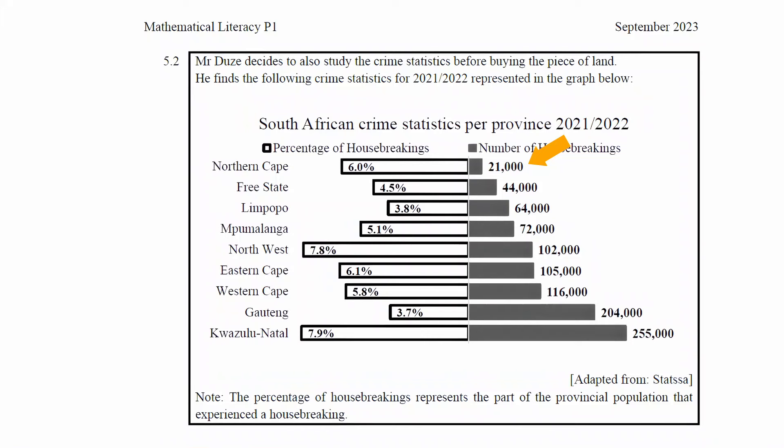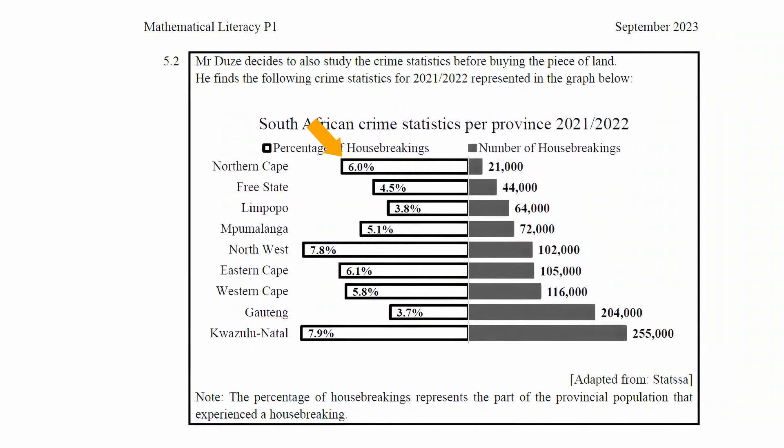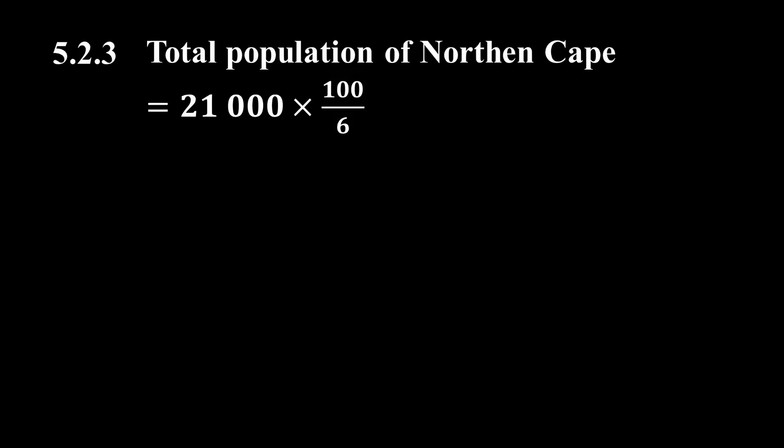We are asked to calculate the total number of households in the Northern Cape. The total number of households can be considered to be 100%. We know that 6% of the households experienced a break-in, and 6% as a number equals 21,000. We can calculate the total number of households using the equation: 21,000 multiplied by 100 divided by 6, which equals 350,000 households.